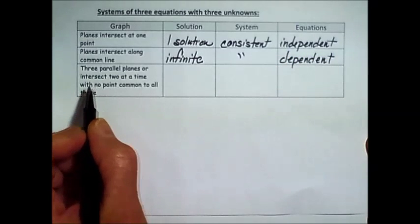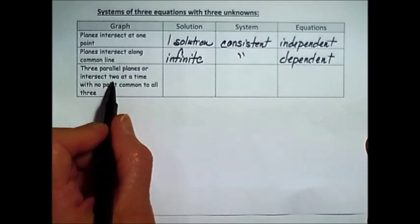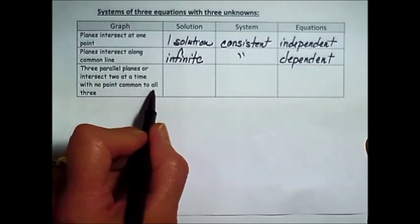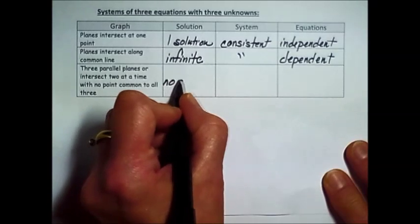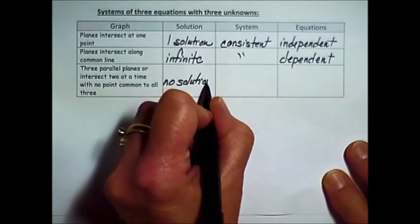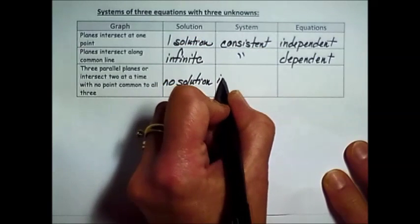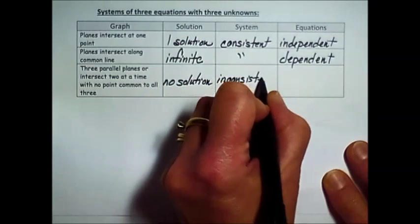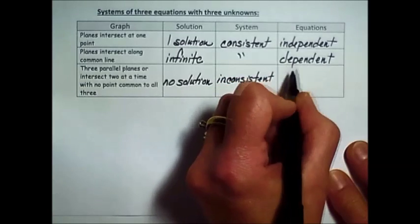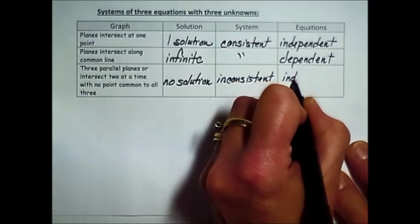Last possibility, the three planes intersect two at a time with no point common to all three. This is consistent but independent.